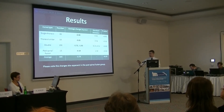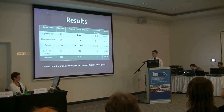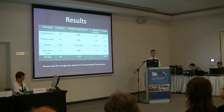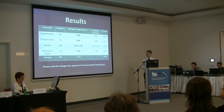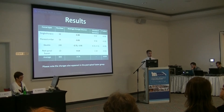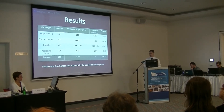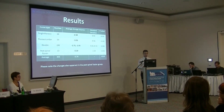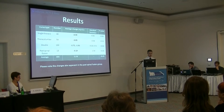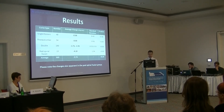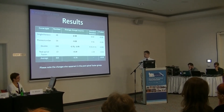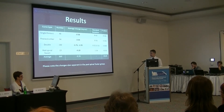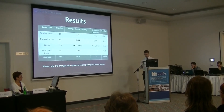An interesting point is that we had 13 post-spinal fusion patients in our study. We included these at the beginning without really expecting to see much change. However, even though it is only a very small group, we did see a reduction of 4.19 degrees to a clinically and statistically significant level. On average, we achieved an angle of trunk rotation decrease of 3.74 degrees, which is both clinically and statistically significant.